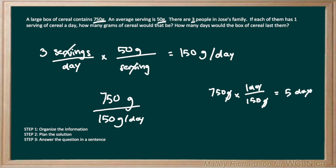But going back to our division over here, we can see that 750 grams divided by 150 grams per day gives us the same answer of 5 days. So you can set up the problem either way. I prefer the second way though because it shows you how your units cancel out.